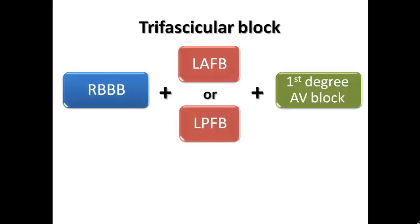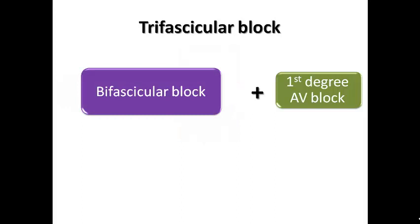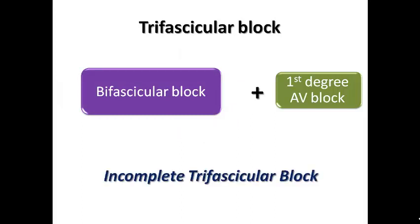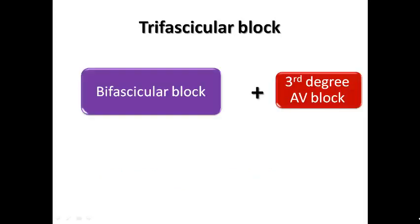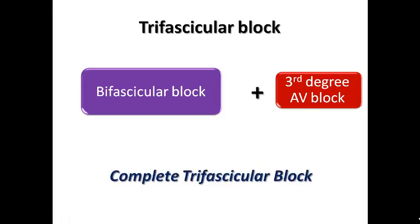Regarding trifascicular block — one might expect it to mean block of all three fascicles: the right bundle branch, left anterior fascicle, and left posterior fascicle. However, the common definition is right bundle branch block plus one fascicle blocked (anterior or posterior) plus first degree AV block. This is bifascicular block with a delay in the AV node. Complete trifascicular block means block in all three fascicles with complete absence of antegrade conduction from atria to ventricles, producing bifascicular block plus third degree AV block.